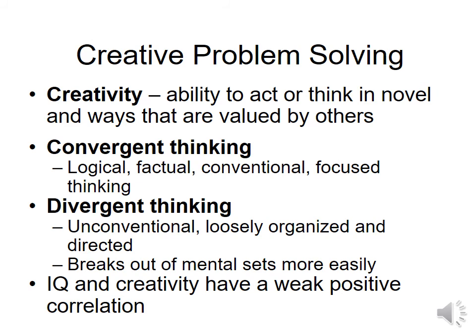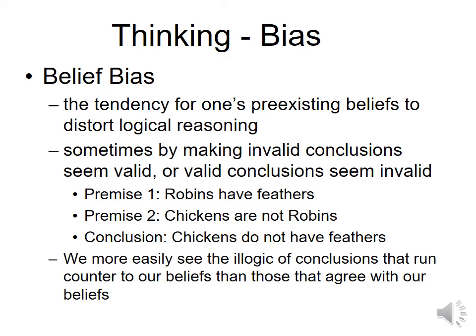We have belief bias and belief perseverance, and one is more extreme than the other. Belief bias is easier to see in others than in ourselves. It might show up as a sports team debate: you listen to someone's argument about why their team is better, you acknowledge their points, but then circle back to your biased belief. It's hard to see the illogical in our own conclusions. We like people who agree with us, so our biases don't always get challenged. Belief bias can be challenged and, in some people, changed.